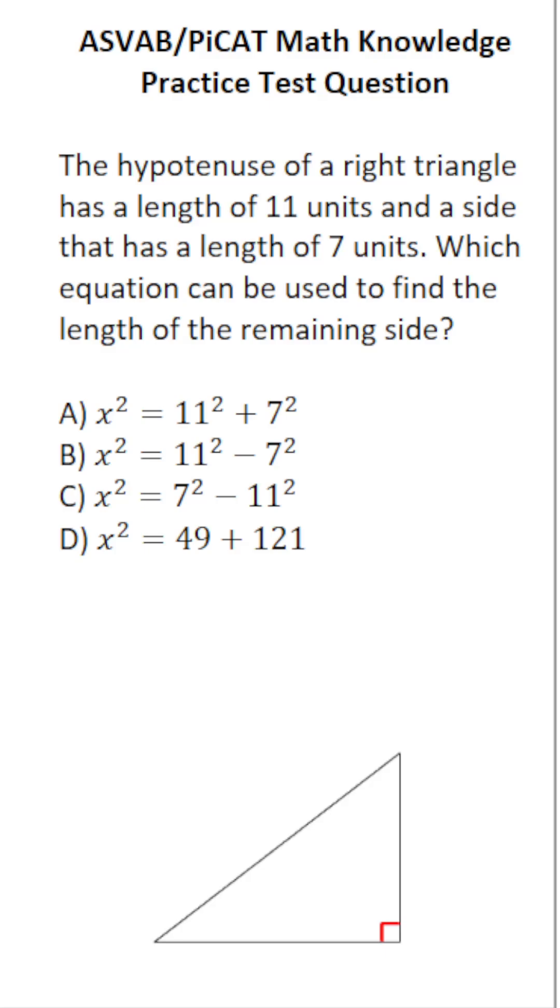Whenever you're given the hypotenuse and side lengths of a right triangle, you should automatically start thinking about the Pythagorean theorem, which says a² + b² = c², where a and b are the sides of the right triangle and c is the hypotenuse.